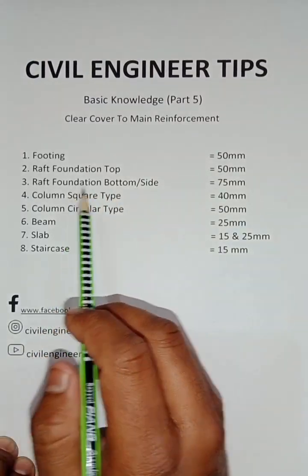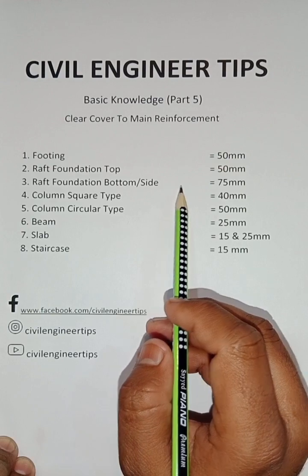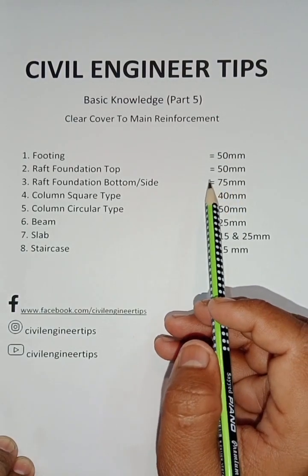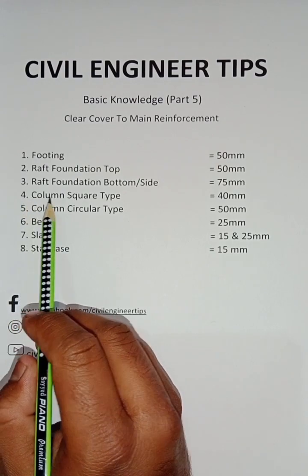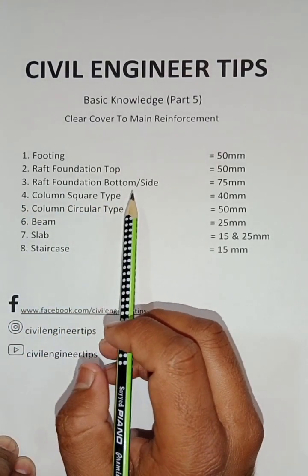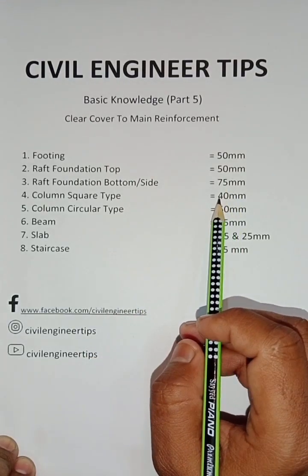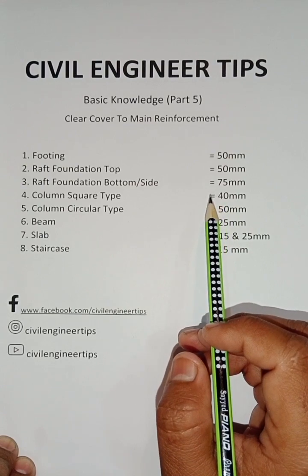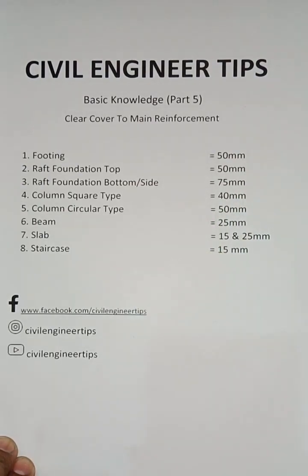For the bottom side, the clear cover is 75 mm. Number four is the square type column — the clear cover is 40 mm. This is mostly used in these structure buildings.